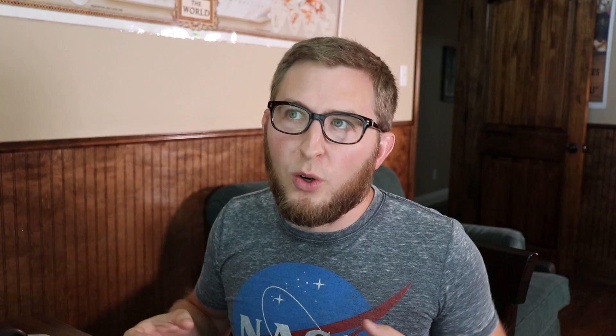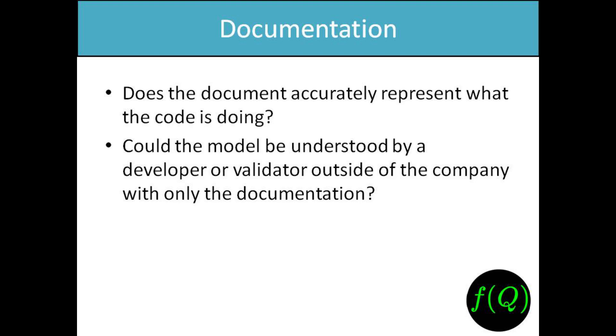Number four is documentation. Does the document accurately represent what the code is doing? A lot of times people copy and paste for documentation, which is poor practice but common. For example, documentation might say there were four types of exclusions, but the code only has three. That mismatch is a finding. Make sure what the code does matches what the documentation describes.